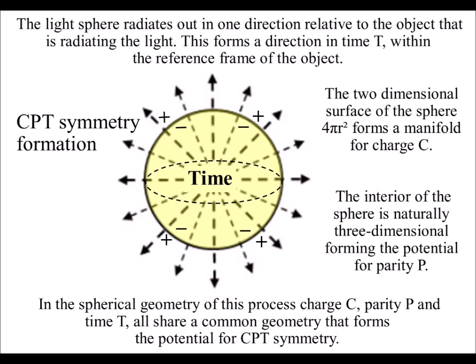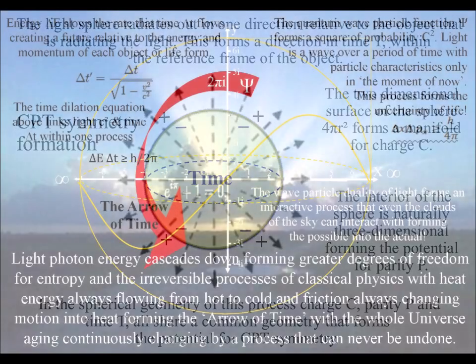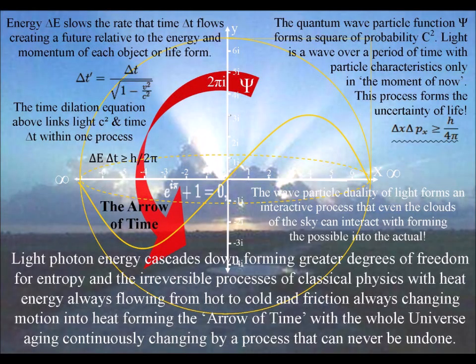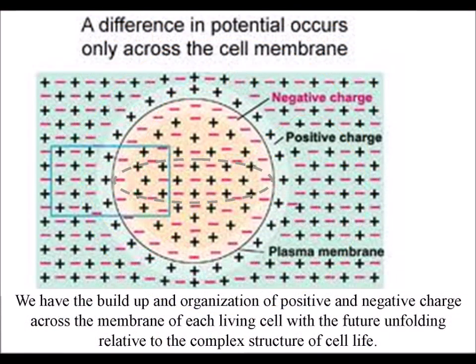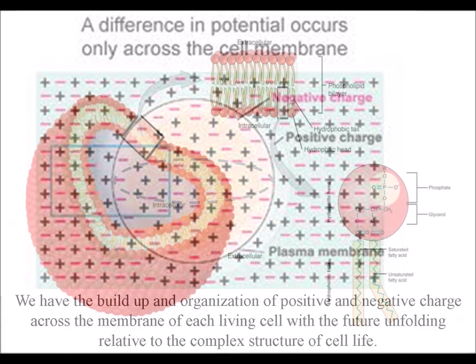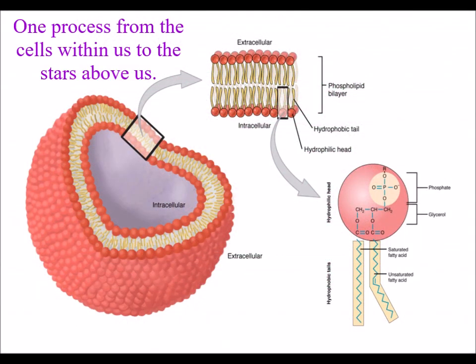This geometrical process forms spherical stars with energy levels cascading down, with a repetition of the same process forming the potential for the geometry of cell life, with the membrane of each living cell organizing and separating positive and negative charges.